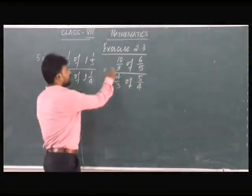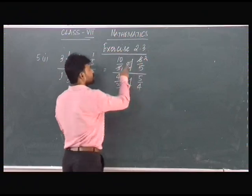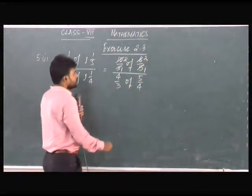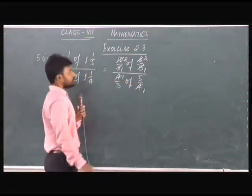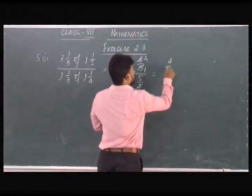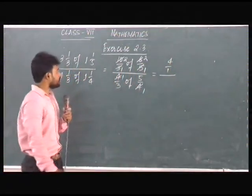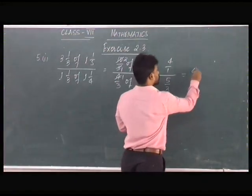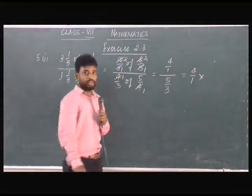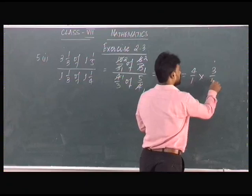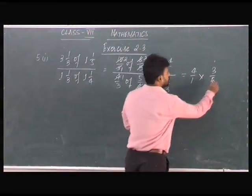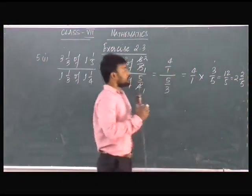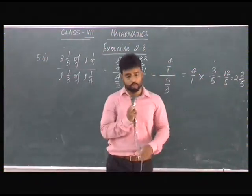Now let us see what can be cancelled. You can cancel 3 with 6 — 3 goes 2 times into 6. You can cancel 5 with 10 — 5 goes 2 times into 10. You can cancel 4 here. So you get 4/1 and 5/3. Ultimately this can be written as 5/3, and you have to find the reciprocal of 5/3, which becomes 3/5. So ultimately your answer will be 12/5, which can be written as 2⅖.